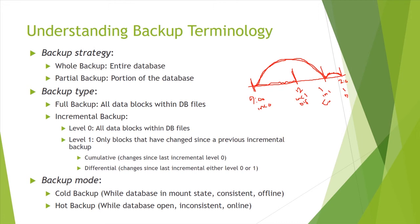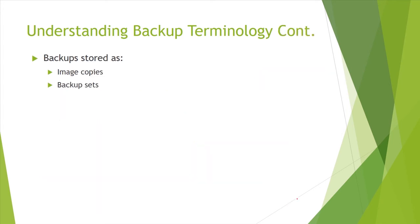Backup modes: taking a backup can be either a cold backup or a hot backup. Cold backup means taking the backup while the database is in mount state or while database files are closed — also called a consistent or offline backup. Hot backup means taking the backup while the database is up and running — also called an inconsistent or online backup. Hot backup is only valid if your database is in archive mode.